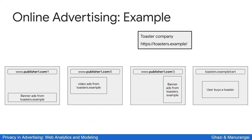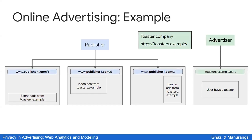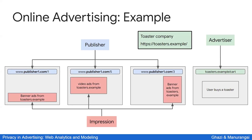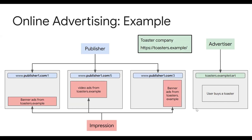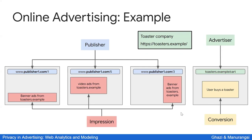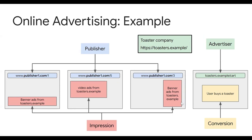After a user sees the ad, they go to your website and buy a toaster. In this case, you as the toaster company are the advertiser. The website showing your ads — publisher1.com — is the publisher. Each ad shown to the user is an impression, and the action of the user buying the toaster is the conversion.